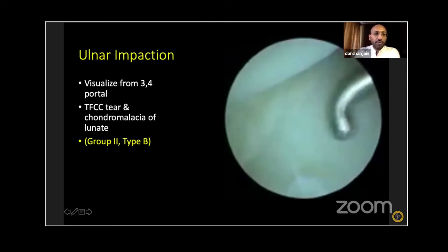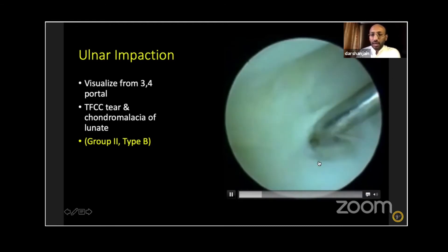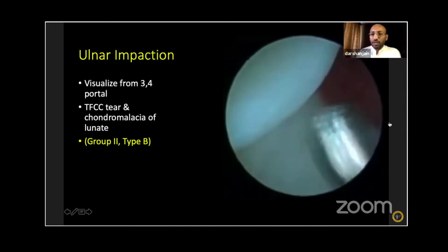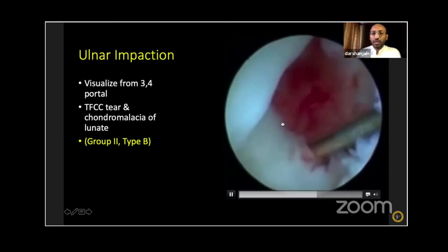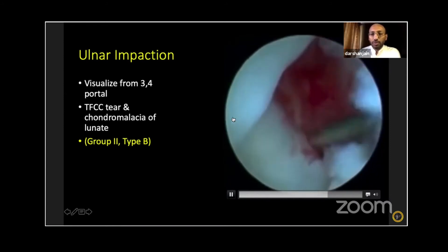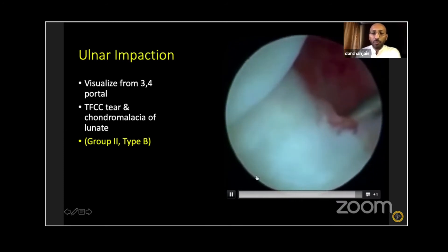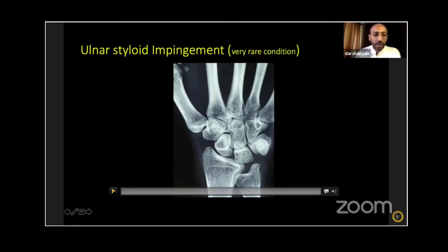There's another entity: ulnar impaction syndrome. Visualizing through the 3-4 portal, you can see a central TFCC tear. The ulna is seen — this happens on a pronated and dorsiflexed hand. There is a dorsal rim tear and softening of the chondral surface of the lunate. That's a dorsal capsular tear of the TFCC. You may not be able to repair the central tear, but the dorsal capsular tear is amenable to repair.